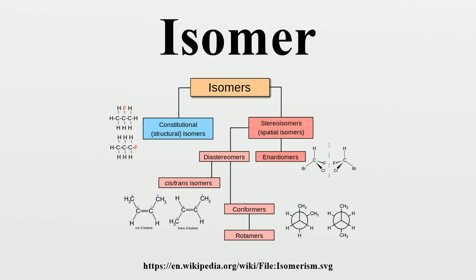Cis/trans isomers are used to describe any molecules with restricted rotation in the molecule. For molecules with C=C double bonds, these descriptors describe relative stereochemistry only, based on group bulkiness or principal carbon chain, and so can be ambiguous. This is especially problematic for double bonds that have more than two substituents. An obsolete term for cis/trans isomerism is geometric isomerism.